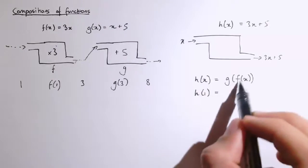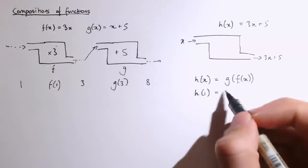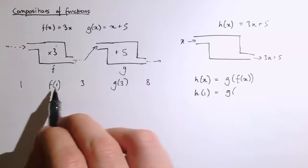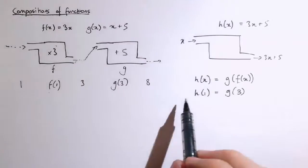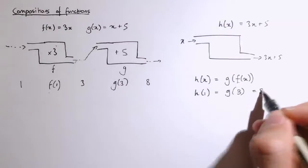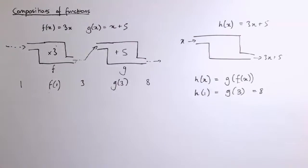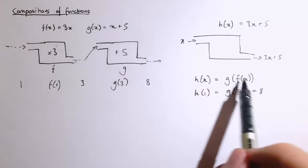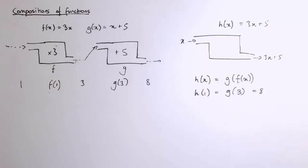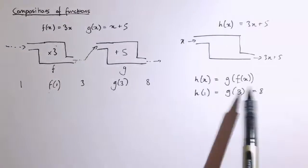So we can replace f of x with, well, f of 1 here is 3, so that's g of 3, and g of 3 is 8. So as with brackets, well, we have to work from the inside out, evaluating here f of x first and then g of x gives us this composition.